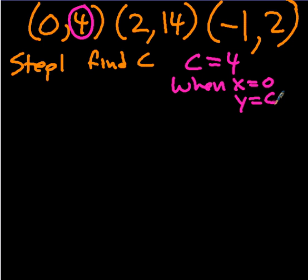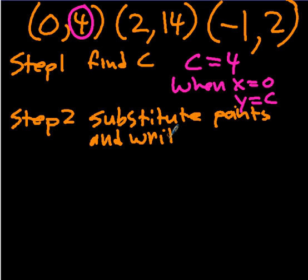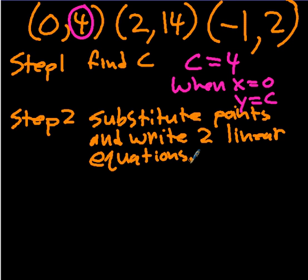Step two is to substitute points and write two linear equations. This is when I substitute the coordinates that I have — (2, 14) and (-1, 2) — and end up with two equations that look something like: a constant equals something times a plus something times b.